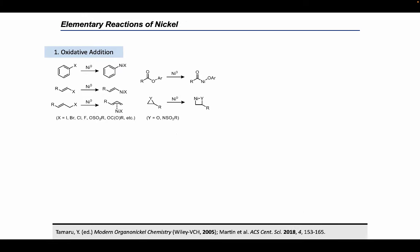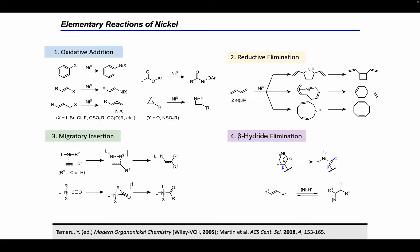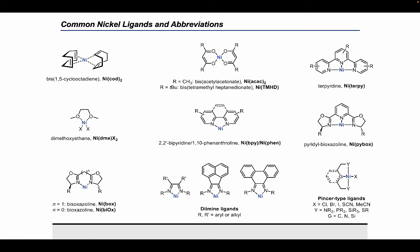The mechanisms of nickel-catalyzed reactions are composed of many of the elementary steps that are found in palladium catalysis, including oxidative addition, reductive elimination, migratory insertion, and beta-hydride elimination. Seen here are some of the most common ligands and ligand classes for nickel and their corresponding abbreviations. Though there are a variety of phosphine-based ligands used in conjunction with both palladium and nickel, there are many more nitrogen-based ligand scaffolds found in organonickel chemistry.